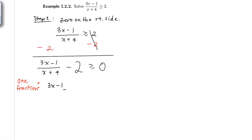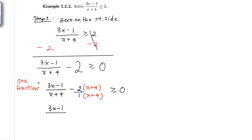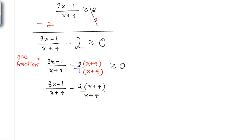Let's rewrite the left side into one fraction. We have (3x minus 1) over (x plus 4) minus 2. I can rewrite 2 as 2 over 1, and then clearly see that the common denominator is x plus 4. Multiplying the top and bottom of 2 over 1 by (x plus 4), still greater than or equal to 0, I get (3x minus 1) over (x plus 4) minus 2(x plus 4) all over (x plus 4). Now I have a common denominator and can rewrite this as one fraction.